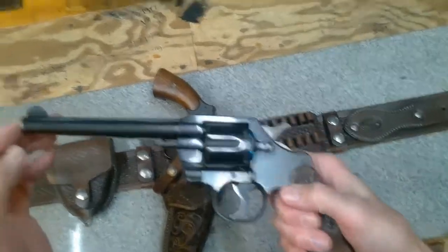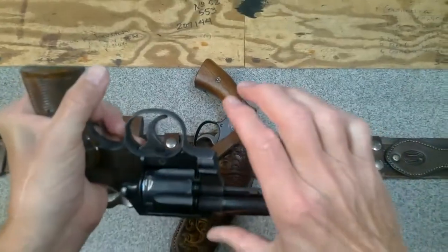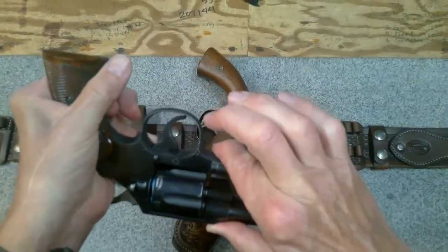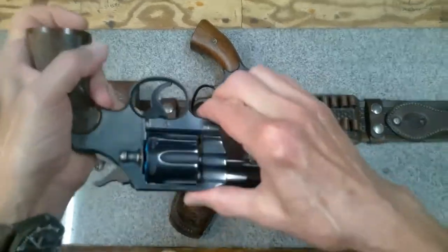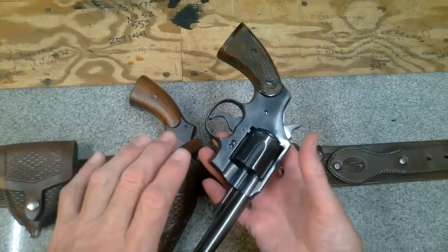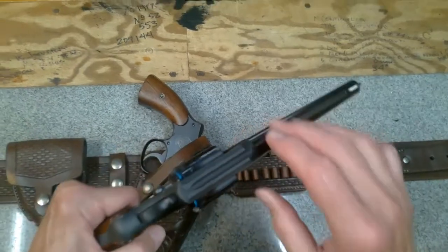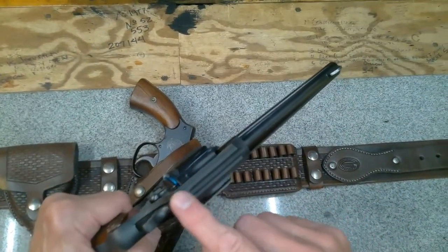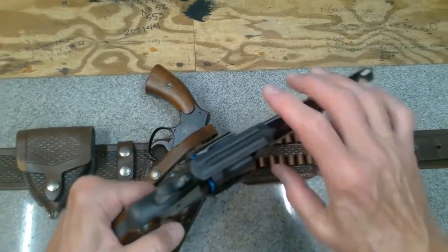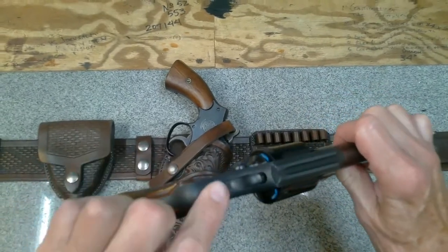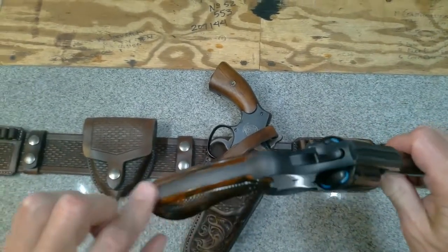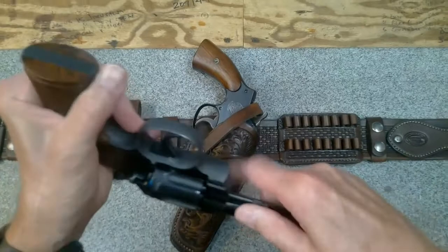While the Lone Star Holster is designed to create weapon retention between the sewn in welt pressing against the weapon's frame, this transitional Colt has a beautiful two-tone polish and matte finish I don't want extra wear on. So the welt will be trimmed back and a safety thumb brake strap will be used for retaining the weapon instead.